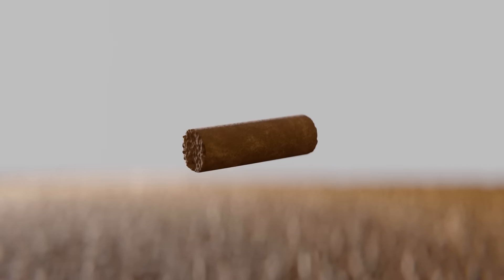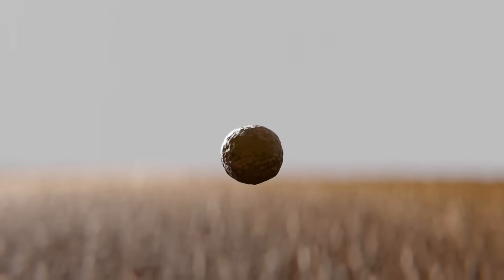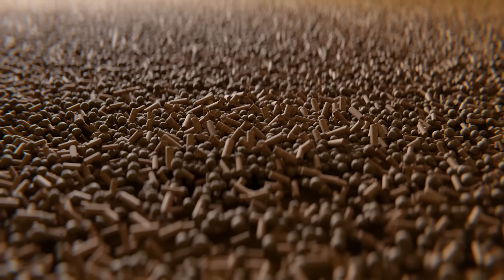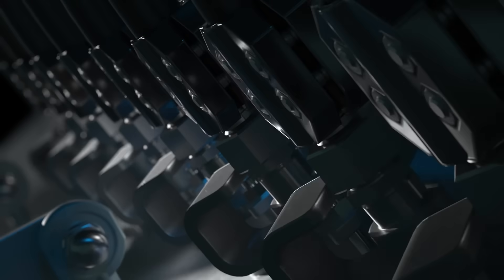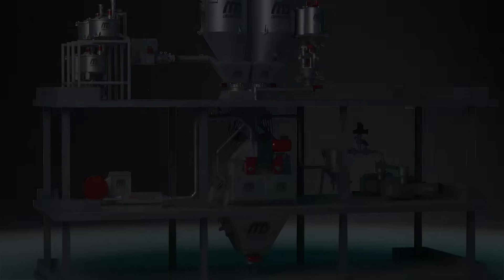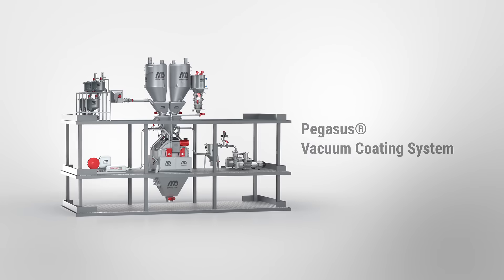For better growing, healthier animals, and for better digestion and less emissions, start optimizing your recipe with a Pegasus vacuum coating system and produce the best possible feed.